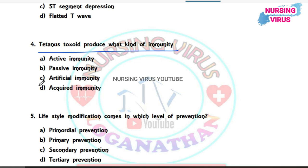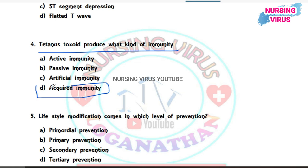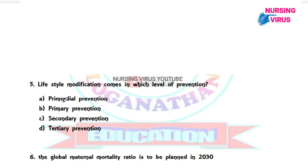Question 4: Tetanus toxoid produces what kind of immunity? The options are active immunity, passive immunity, artificial immunity, and acquired immunity. The correct answer is acquired immunity — tetanus toxoid produces acquired immunity.